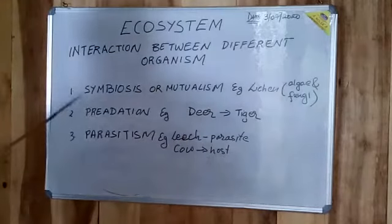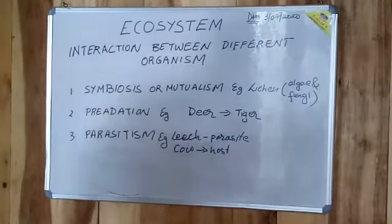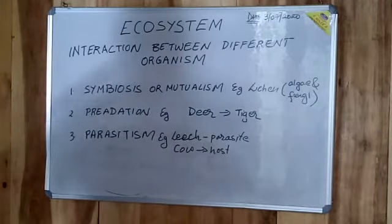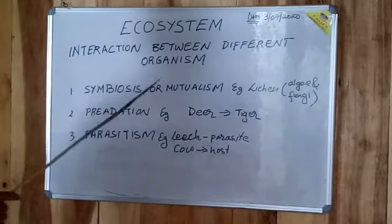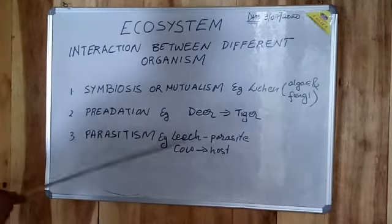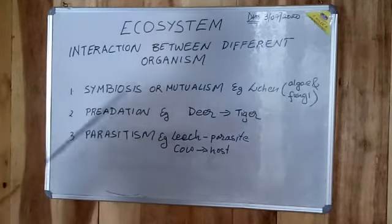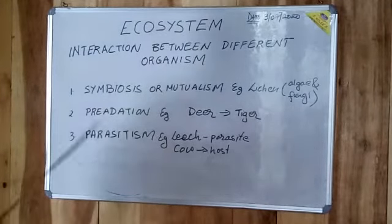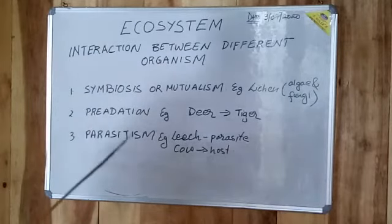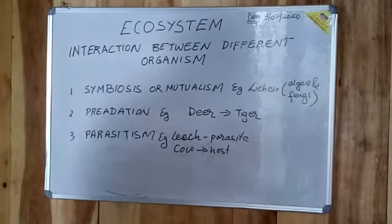So there are basically three different types — there are many different types, obviously — but for you, the class eight students have to know about the three different types of interrelationship between organisms: that is symbiosis or mutualism, predation, and parasitism.